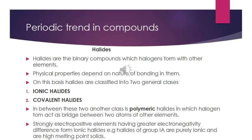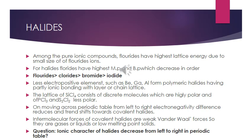Elements that are strongly electropositive and have a large electronegativity difference with halogens form ionic halides. For example, alkali metals of group 1A are highly electropositive and form purely ionic compounds with high melting points. Looking at the decreasing order of melting and boiling points: fluorides are the highest, then chlorides, then bromides, and then iodides.